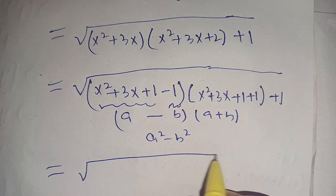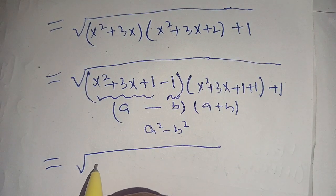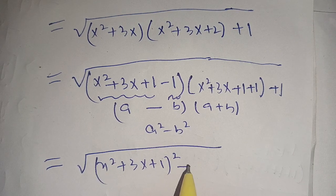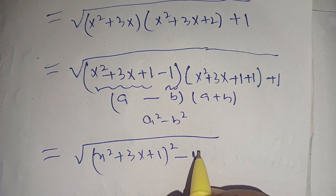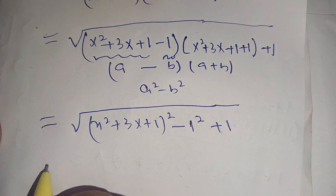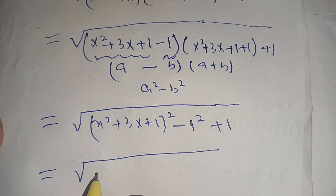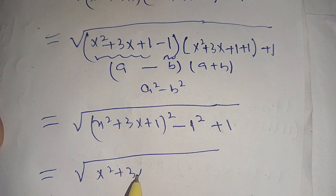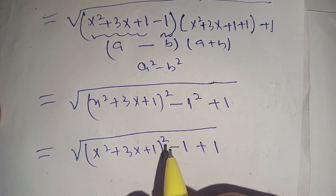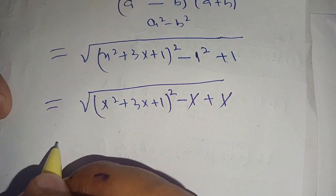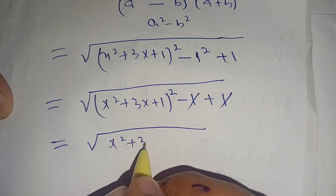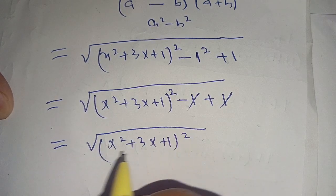Using this identity we get the square root of a², which is (x²+3x+1)², minus b², which is 1², plus 1 as it is. In the next step we can write it as the square root of (x²+3x+1)² minus 1 plus 1. That becomes 0, so the term simplifies to the square root of (x²+3x+1)².